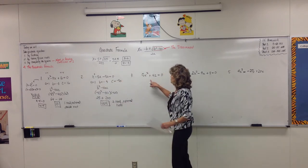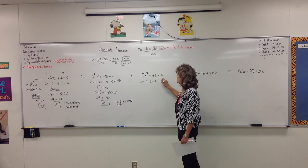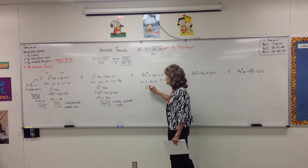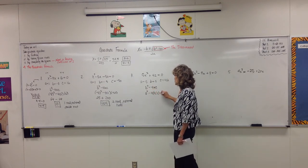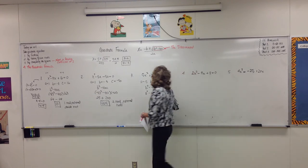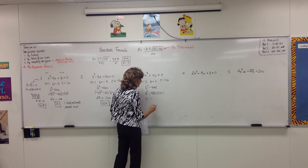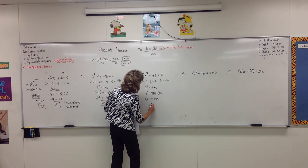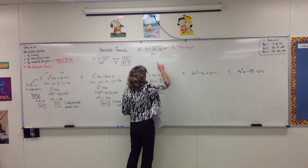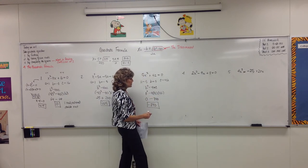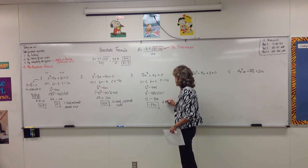Example 3: a is 5. Notice there's no middle term, so b is 0 and c is 42. Calculating the discriminant: 0 squared minus 4 times 5 times 42. Zero squared is 0, and 4 times 5 times 42 is 840. So the discriminant is negative 840. A negative discriminant means the solutions are imaginary. Since the discriminant is not zero, we'll have two solutions, and they will be complex.